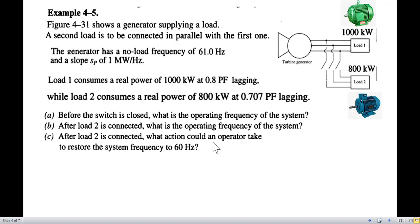Now, we have to find these three questions: before the switch is closed, what is the operating frequency of the system? After the load is connected, what is the operating frequency of the system? And after load two is connected, what action could the operator take to restore the system frequency? Let's recall that when we increase the load, what will happen? The generator speed will fall down. The shaft speed will fall down, and so will the frequency come down. And we have to have some mechanism to restore that frequency. By opening the throttle of the turbine, we can increase the speed, the power, and the frequency.